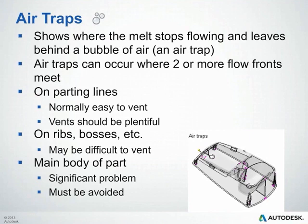The Air Trap plot shows where the melt stops flowing and leaves behind a bubble of air. Air traps typically occur where two or more flow fronts meet. When reviewing this result, you're mainly concerned with where these air traps are forming. Hopefully they're on your parting lines, because they're normally easy to vent. If they're on ribs or bosses, it could be slightly more difficult to vent and may require creative solutions. If they're on the main part body, this could be a significant problem and should be avoided if possible.